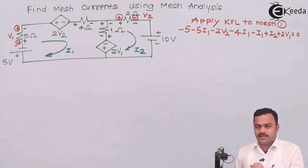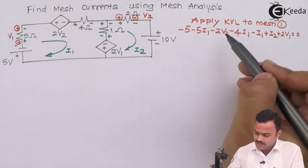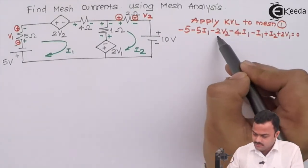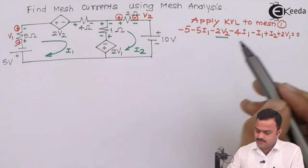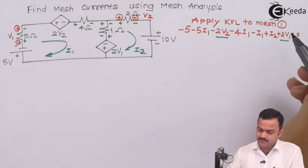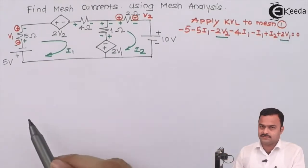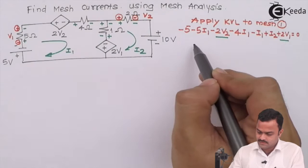We have written the KVL equation for mesh one. In this equation we must have only the variables I1 and I2 as our loop currents. However, V2 is an extra variable and V1 is an extra variable — we need substitution equations for both.